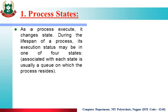Now, the process state. If I talk about a process, from when a process is generated to when it is terminated, during these two points it moves through different states. As a process executes, it changes state. During the lifespan of a process, its execution status may be in one of four or five states, and associated with each state is usually a queue on which the process resides.